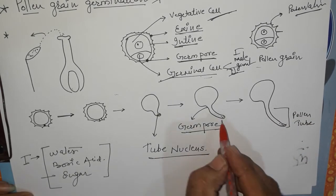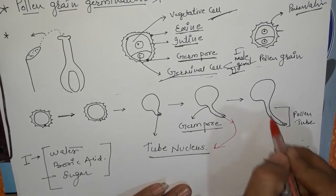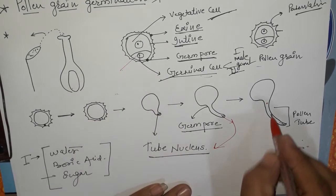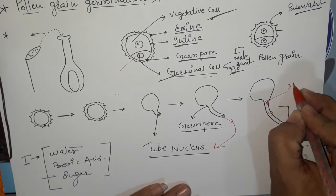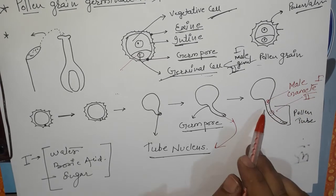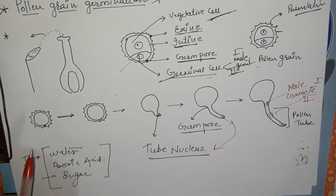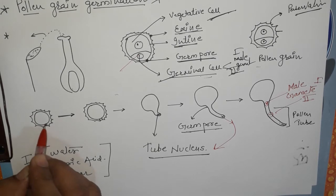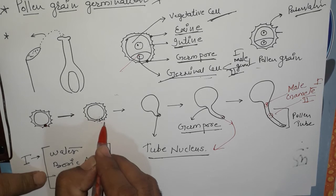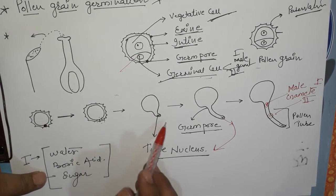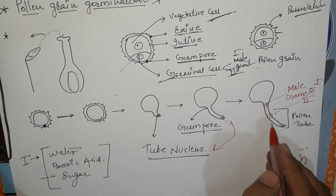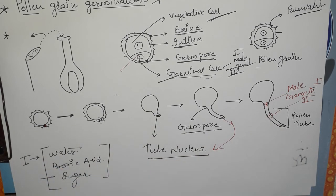After the formation of the complete pollen tube structure, the generative cell divides and produces two male gametes. The first male gamete and the second male gamete are now released into the pollen tube. In the germinal area, the tube nucleus enlarges and the tube cell forms a long tube. After the development of this long tube, the germ cells divide and release two male gametes, which travel through the tube cell. This process is called pollen grain germination.